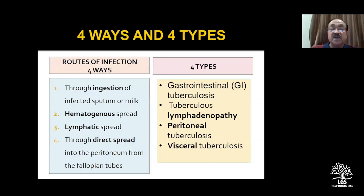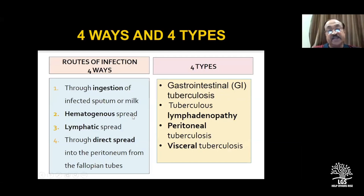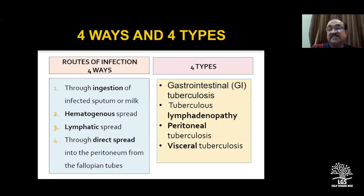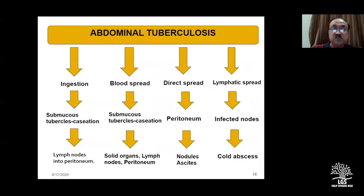How does it spread? Remember four ways: ingestion of sputum or milk, hematogenous, lymphatic, and direct spread. A classical example is spread from the fallopian tube into the peritoneal cavity. There are four types: lymphadenopathy, peritoneal tuberculosis, visceral (not very common), and intestinal tuberculosis.